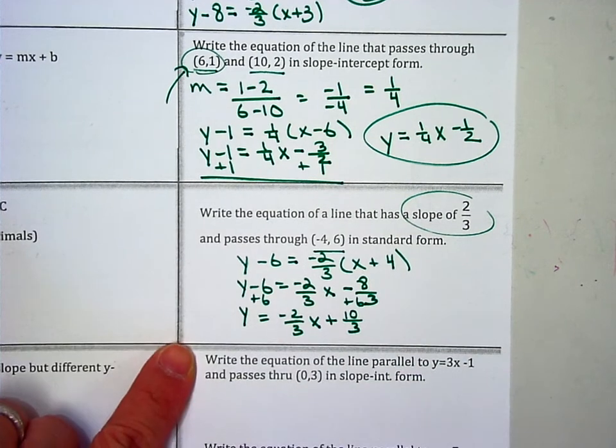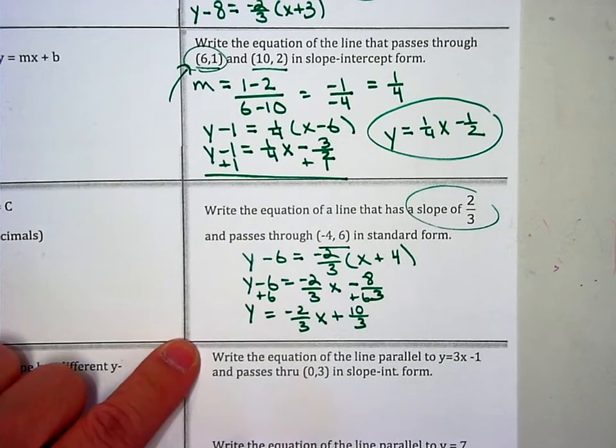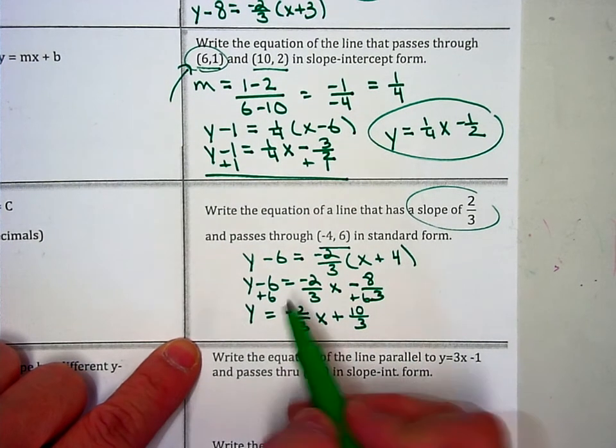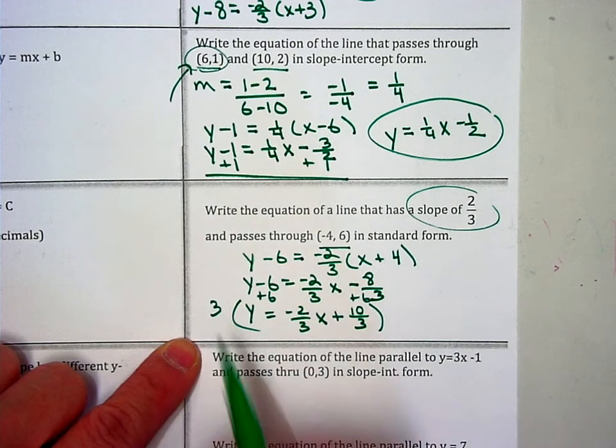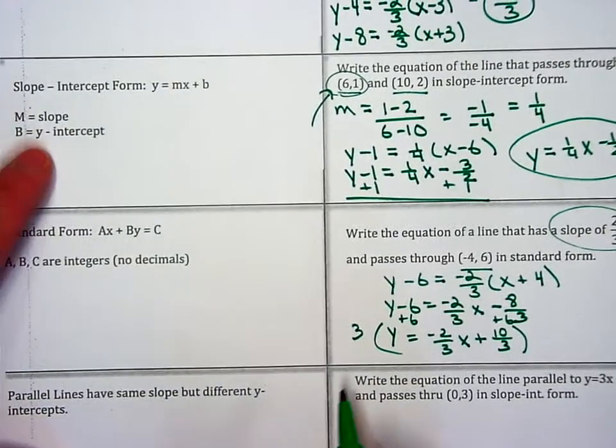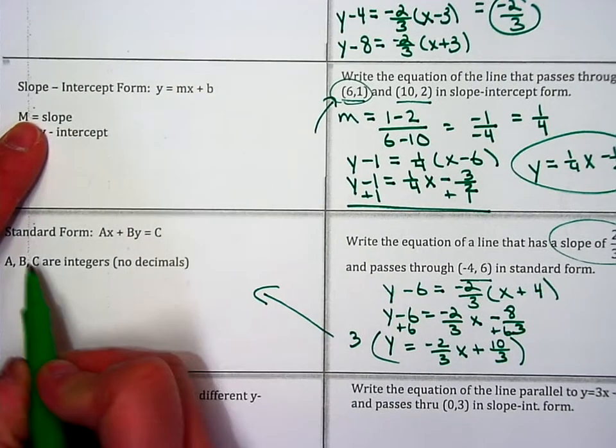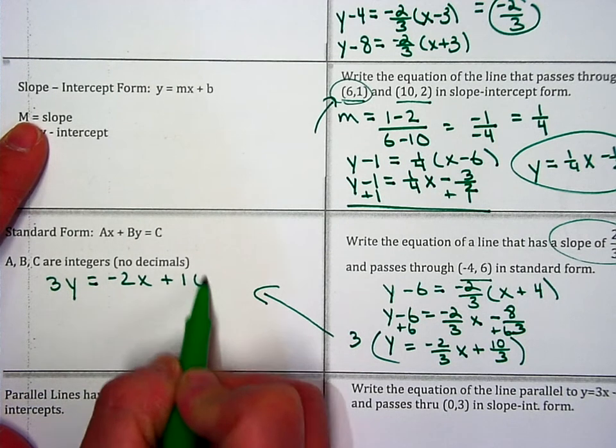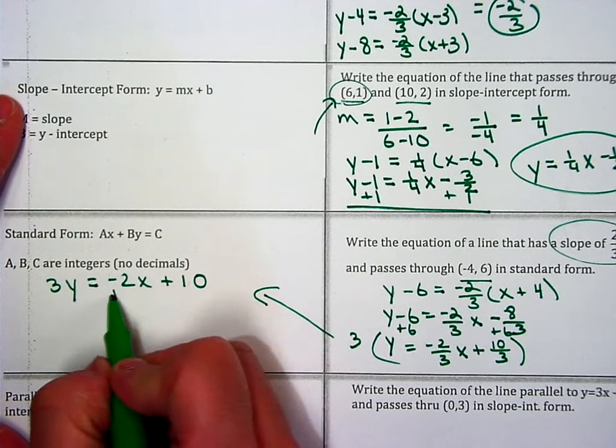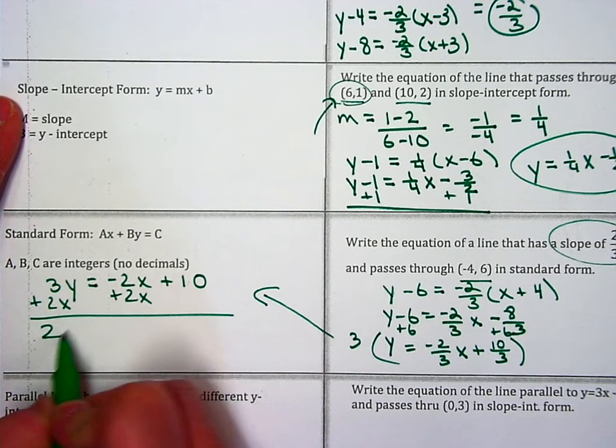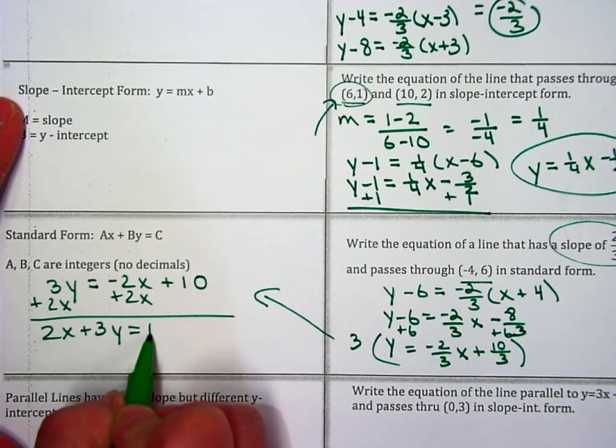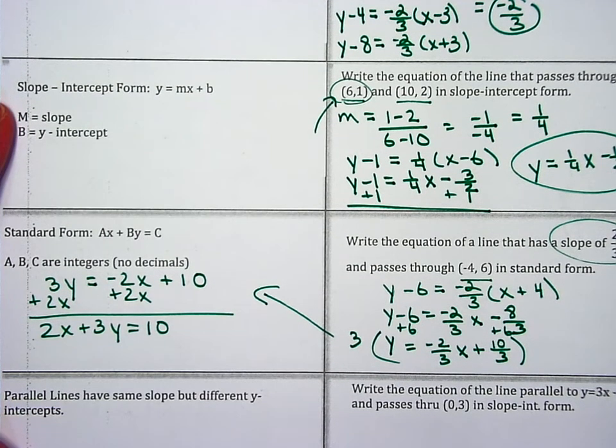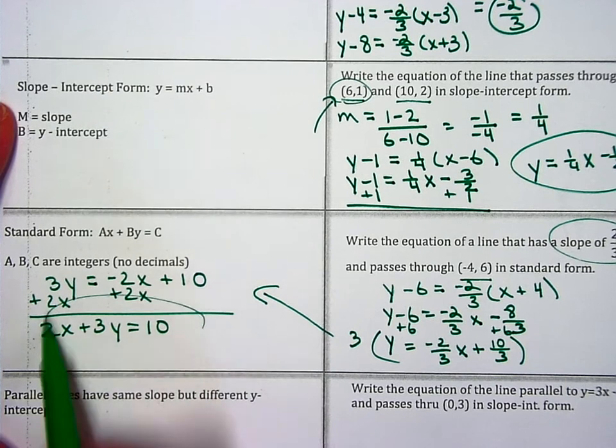Okay, last step is standard form. I see fractions. The only fraction I see is a 3 though, so you're going to multiply everything through by 3. And I'm going to finish this problem up over here. So when you use your calculator, you get 3y equals negative 2x plus 10. I need x and y on the same side. Plus 2x plus 2x. 2x plus 3y equals 10. And I see no numbers in front of x that are negative, so I'm done. Here's my standard form.